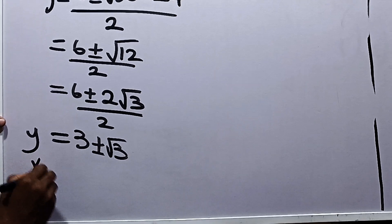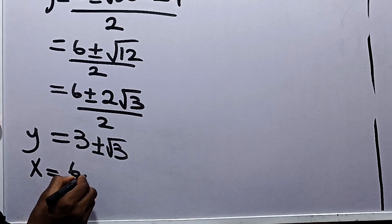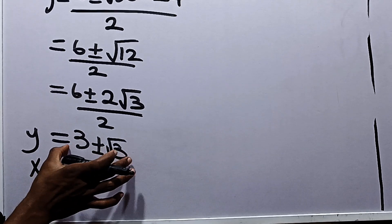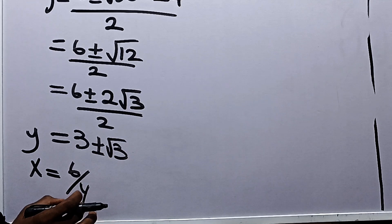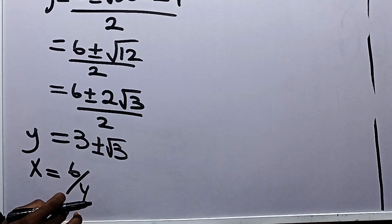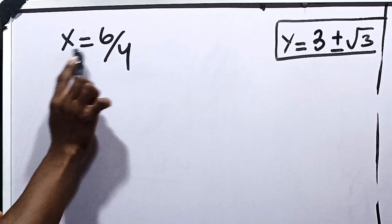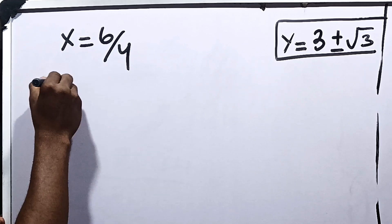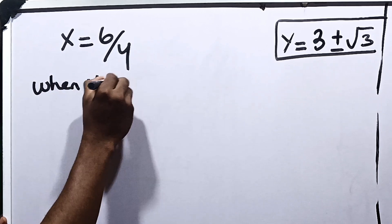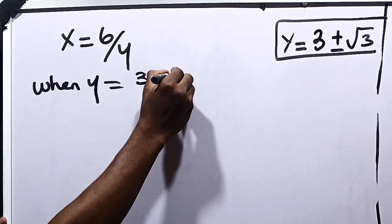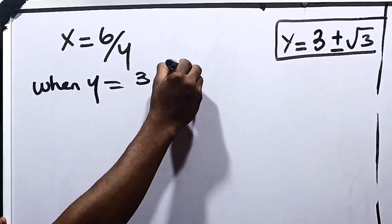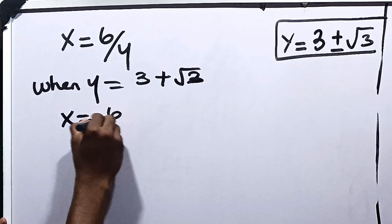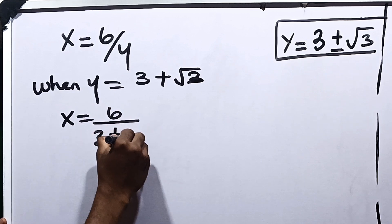Recall that x is equal to 6 over y. We substitute values for y into this equation to get the values for x. When y is equal to 3 plus root 3, x will now be equal to 6 divided by 3 plus root 3.